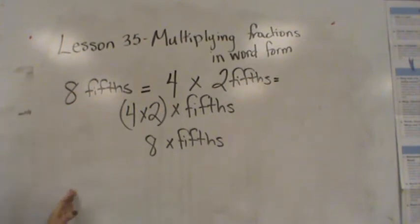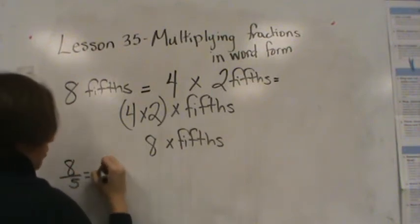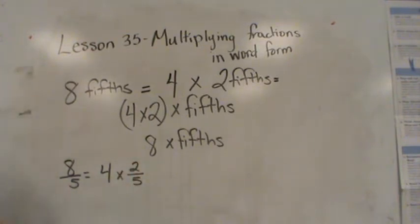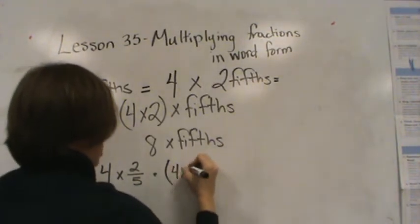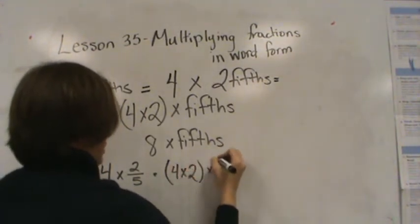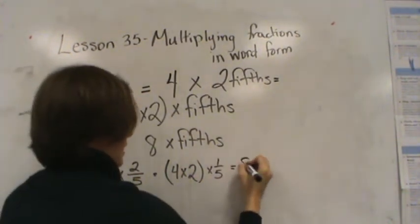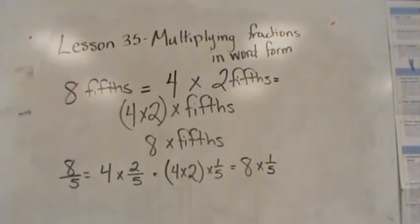Now let's talk about what that looks like in number form, because I think that'll help you relate to it a little bit more. So I have here 8 fifths, which is equal to 4 times 2 fifths. That is also the same as saying 4 times 2 times 1 fifth. Or we could say 8 times 1 fifth, and that would give us 8 fifths.